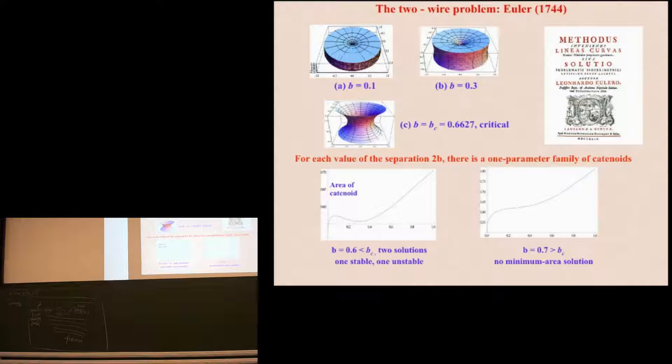There is a great history for minimal area surfaces, and as in so many things, this goes back to Euler. In 1744, he wrote a paper on the catenoid, the minimal area surface, bounded by two circles with a common axis. And this is the picture of the minimal surface. 2B is the separation of the two circles. So we've got two circular wires here, and a soap film connecting.